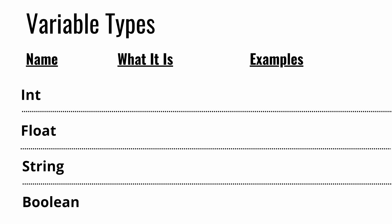So let's start with int. Int represents any whole number. Examples of an int would be 1, 5, or 12 — literally any whole number you could think of. This is arguably the most common variable you're going to see.